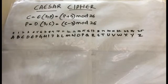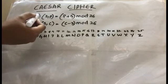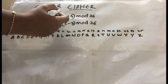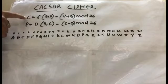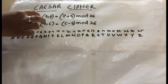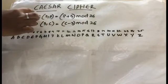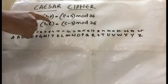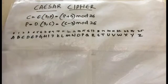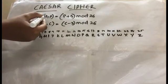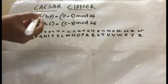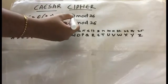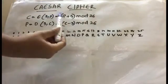We use the formula: C = E(3, P) = (P + 3) mod 26, where C stands for ciphertext, E stands for encryption, and P stands for plaintext. So to find the ciphertext you substitute the plaintext value into P plus 3 mod 26.